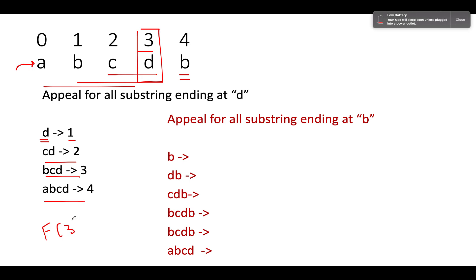That means we have successfully identified the function value for the third index. Now comes the question: can we utilize this value to compute the appeal for all these strings ending at this particular b? The answer is yes. How? Let's walk through it.